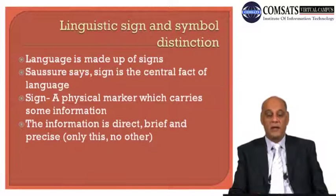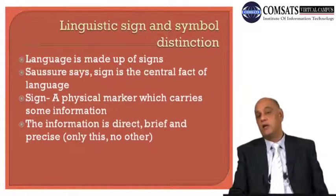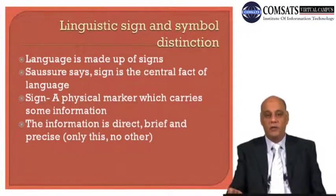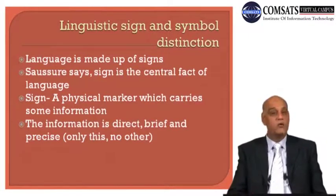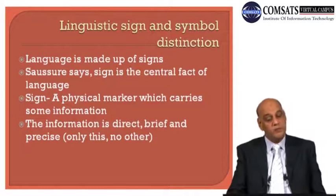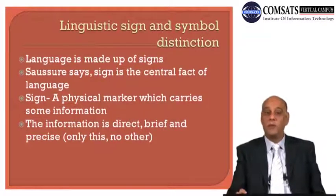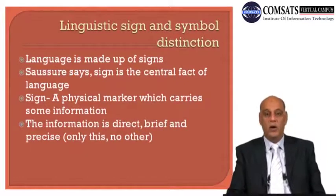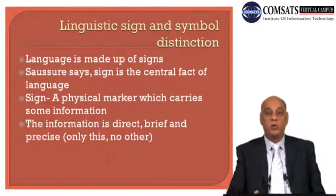What is a sign? It's a physical marker, an indication which carries some information. The information we get from signs is very direct, brief, and precise. This means a certain sign means only one thing and nothing else — one sign signifies or gives information about only one thing.